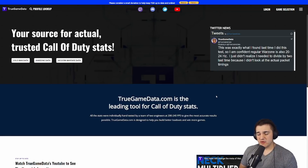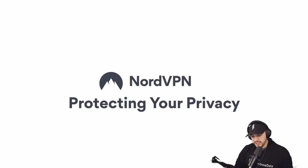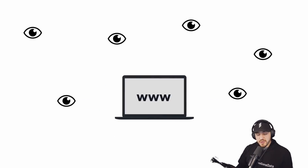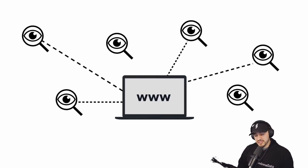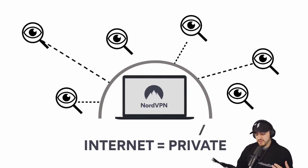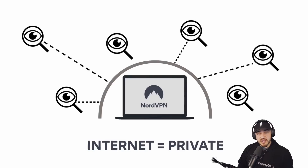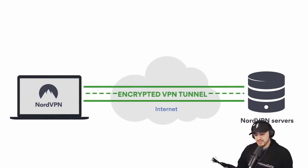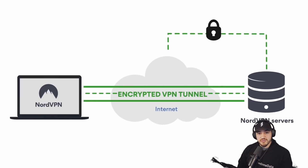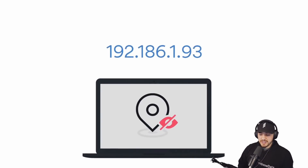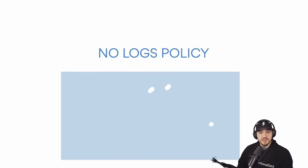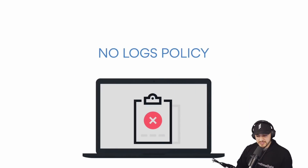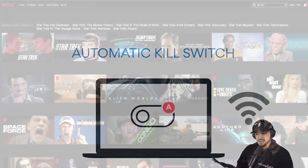Before we get into that, we'll go through a sponsored segment. This video is sponsored by NordVPN. There are a lot of different companies and people out there that want access to your information — they want to see what you're browsing, whether for advertising or more malicious things. NordVPN gives you completely private browsing: it connects your computer to a NordVPN server through an encrypted tunnel, and then from there it goes to the internet, using different IP addresses so there's no way to track what you're looking at.